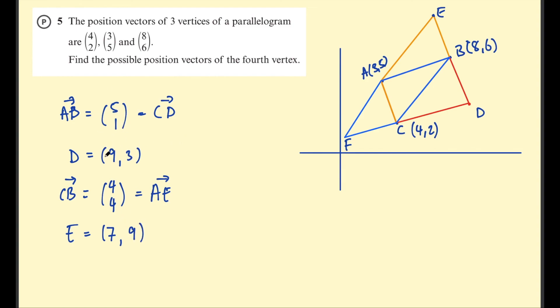It's important to differentiate between vectors and points when you're talking about position vectors. It's easy to get mixed up there. Okay, last one, F. We've got CB, so FA would be the same as CB. And we need to go the other way, so subtract (4, 4) from (3, 5). And that means F—if we subtract 4 from 3, we get -1, and then 5 take 4 is 1. So the three solutions are (9, 3), (7, 9), and (-1, 1). Congratulations if you got those yourself.